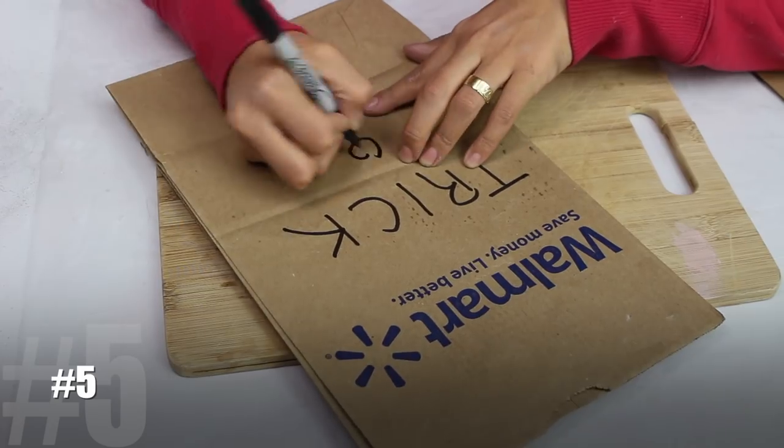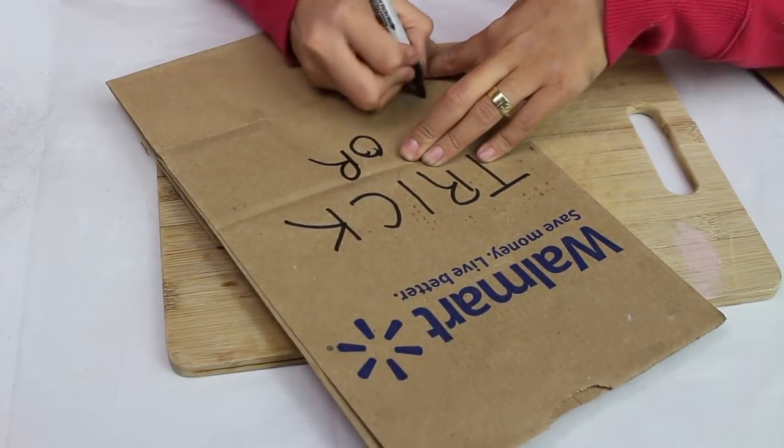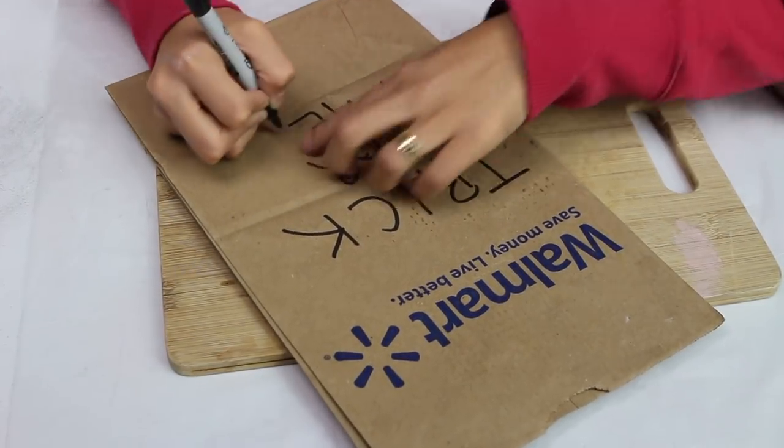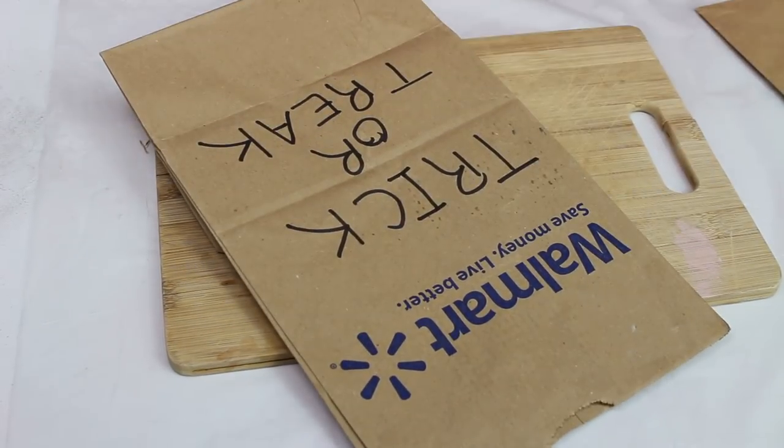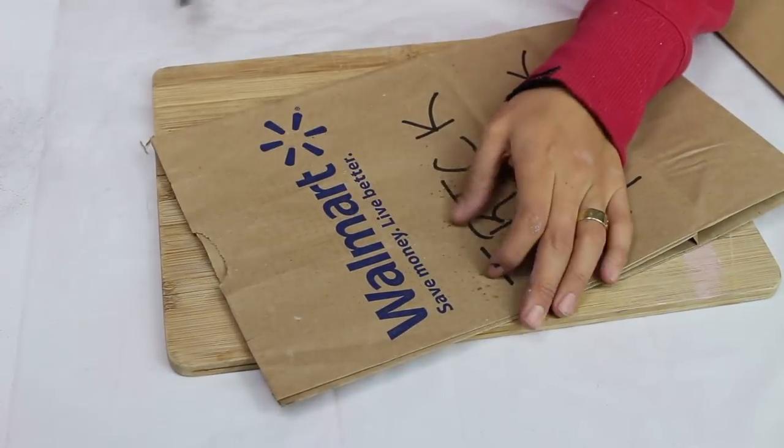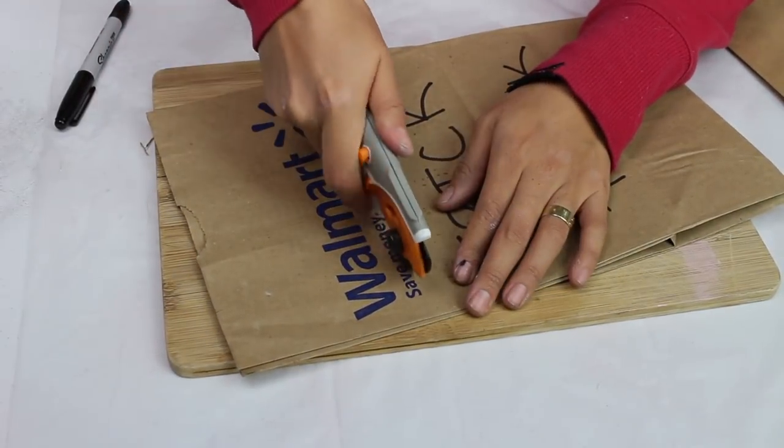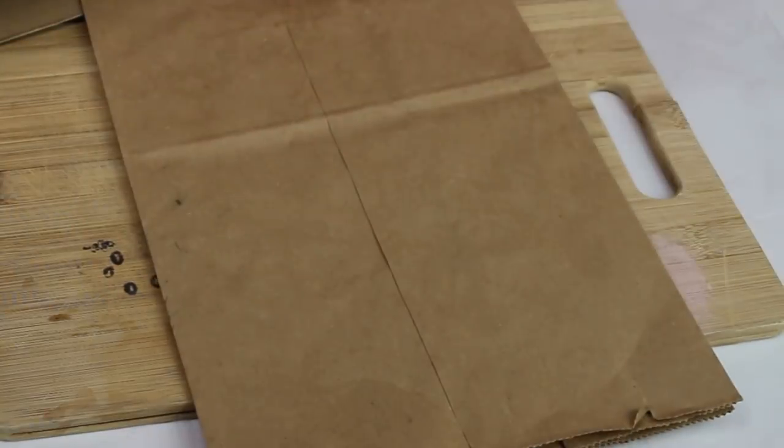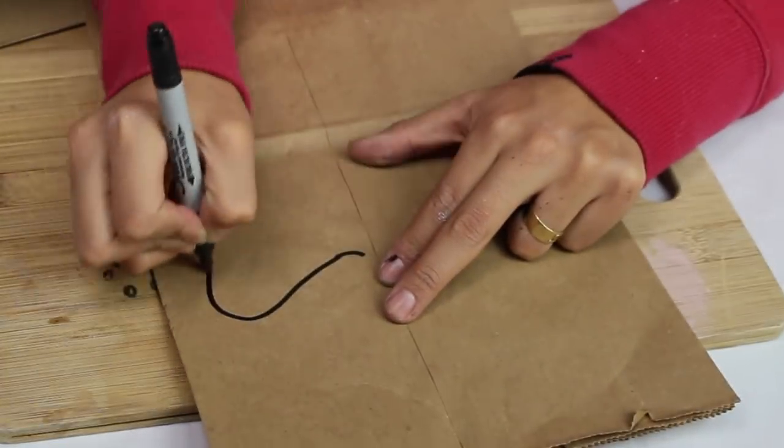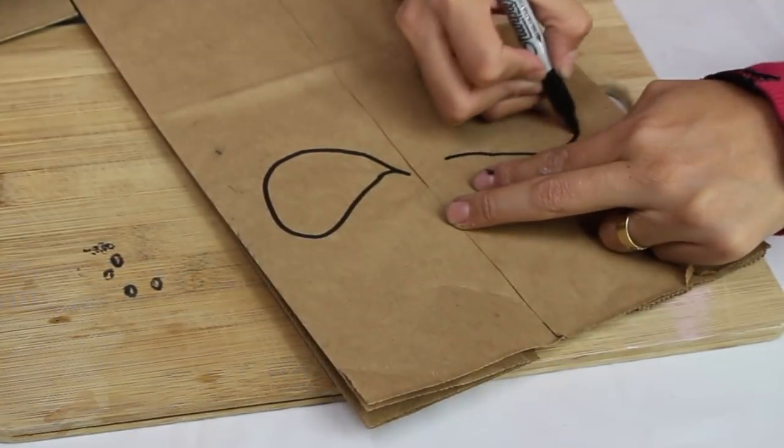Now the next idea is very easy with these bags that they sell at the store or that they give you when you buy bread. We are simply going to write trick or treat. Here I made a mistake but anyway I'm cutting the top part so you can't see it says Walmart where they gave them to me.